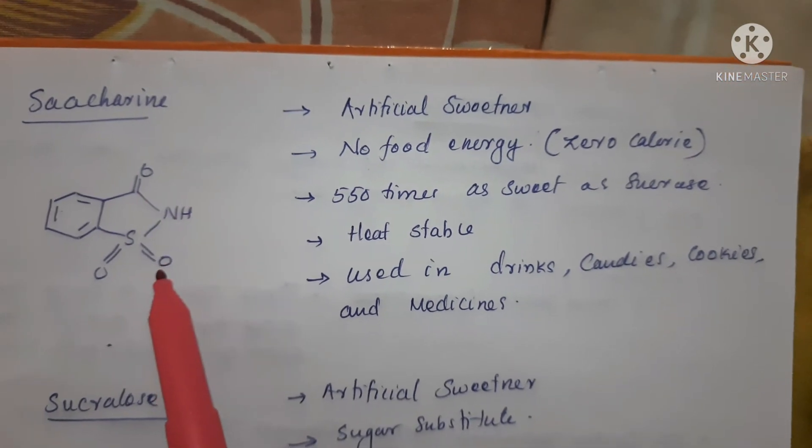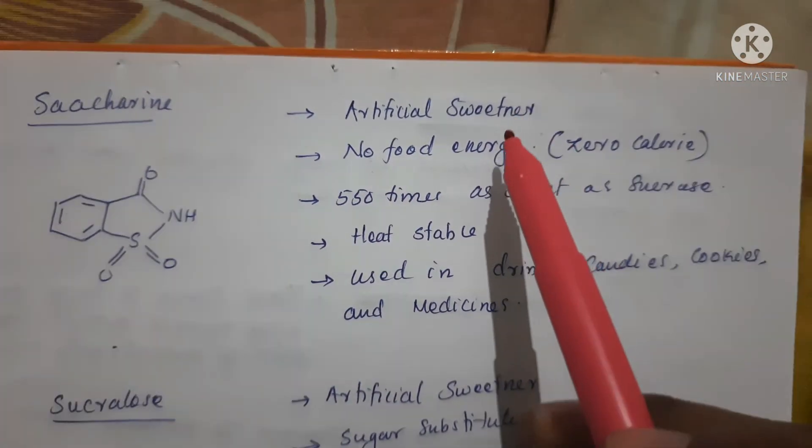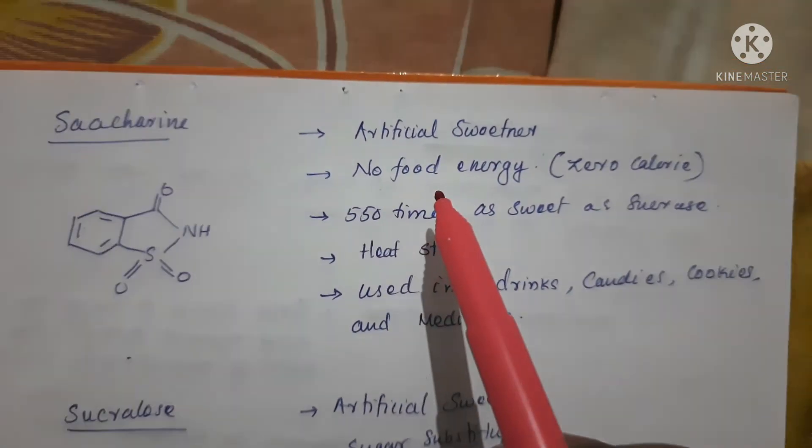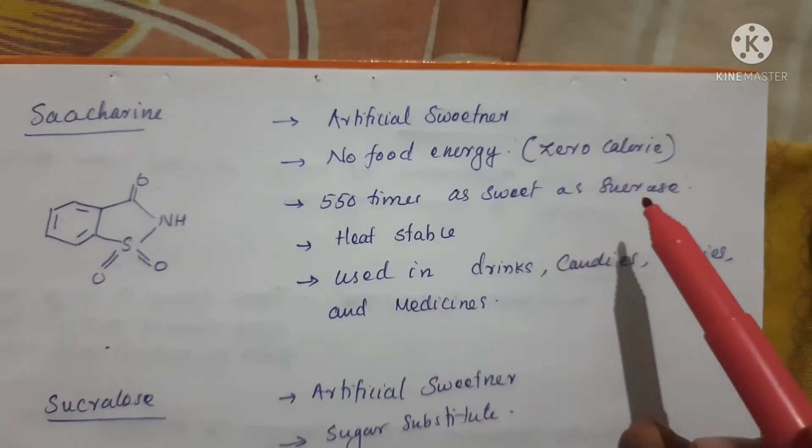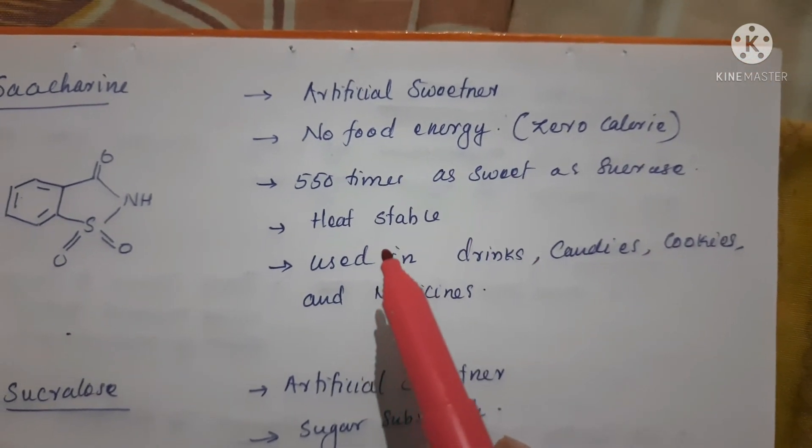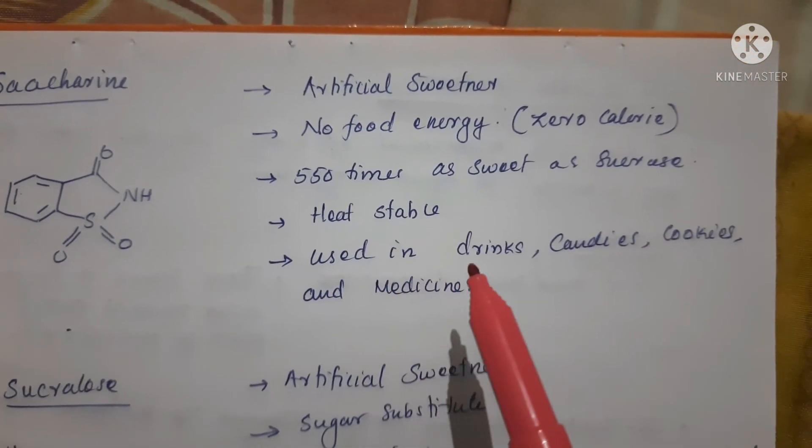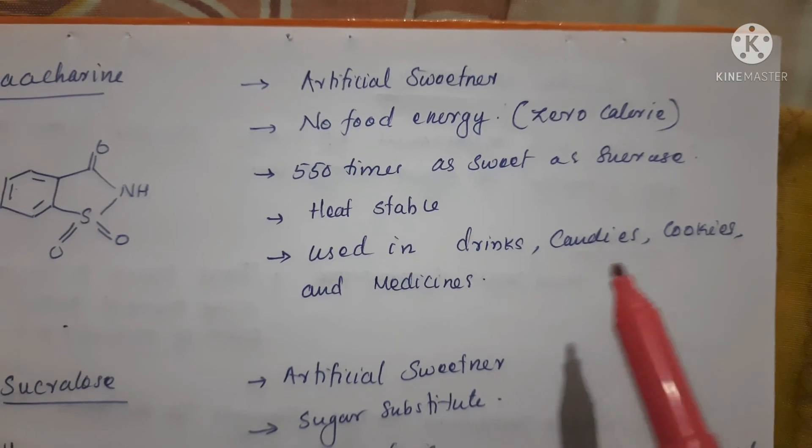Saccharine - here is the structure. It's an artificial sweetener with no food energy, zero calories, 550 times as sweet as sucrose, and it is heat stable and used in drinks, candies, cookies, and medicines.